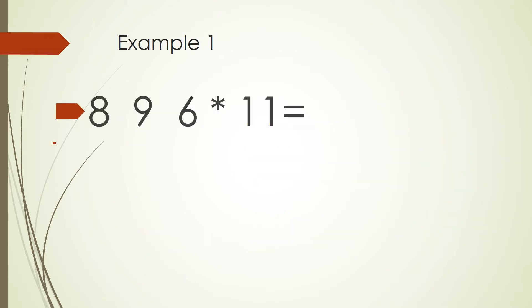For example, let's say that we want to do this operation. The first rule is drop the number 6, so we write the number 6. Next one is add 6 plus 9 which is 15. So we write 5 and we carry 1.